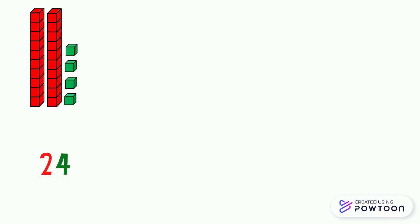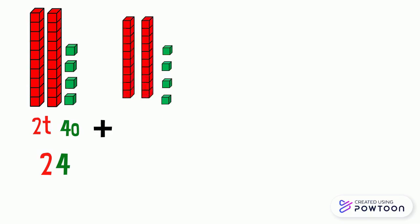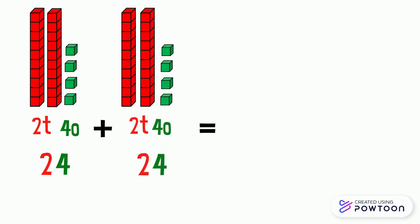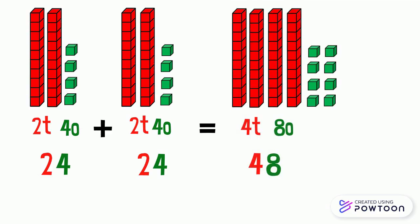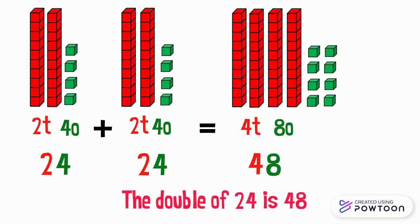The number 24 is made up of 2 tens and 4 ones. To find the double of 24, we should also add 2 tens and 4 ones. It becomes 4 tens and 8 ones. This number is 48. So the double of 24 is 48, because 24 plus 24 equals 48.